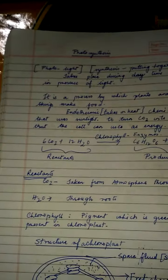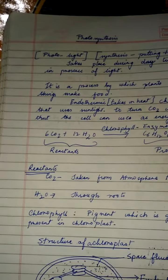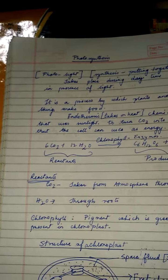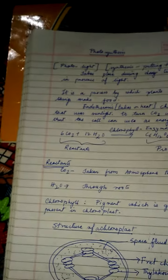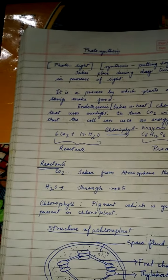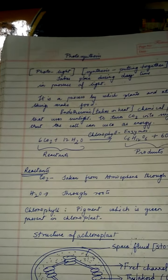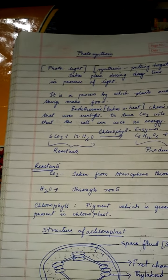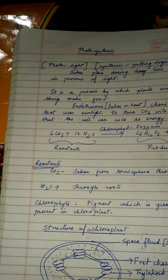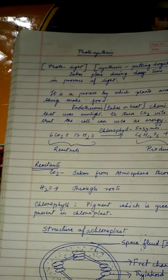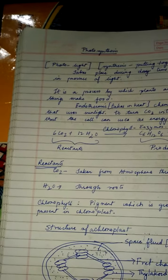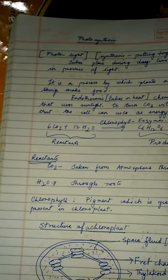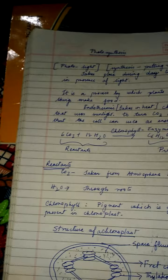Photosynthesis is the new chapter we are starting today. Photo means light and synthesis means putting together. It takes place during the daytime in the presence of light. Photosynthesis is an endothermic chemical process that uses sunlight to turn carbon dioxide into sugar that the cell can use as energy. We have a balanced reaction on the board.